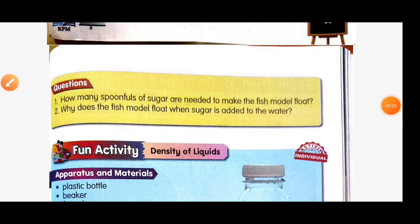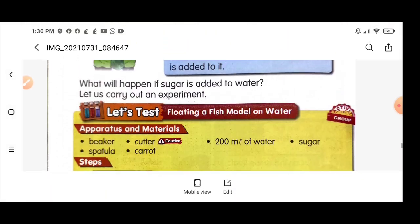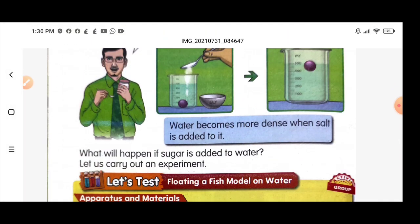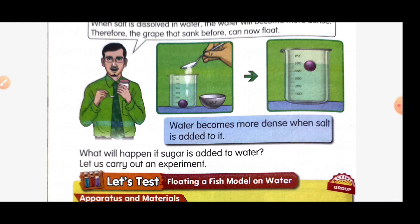Let's discuss the answers. How many spoonfuls of sugar do you need to make the fish model float? It depends on your activity — maybe three or four spoonfuls of sugar. Why does the fish model float when sugar is added to the water? The answer is the same: the water becomes more dense when sugar is added to it.